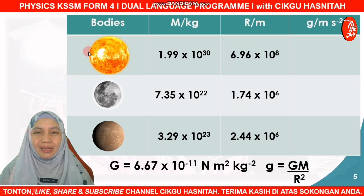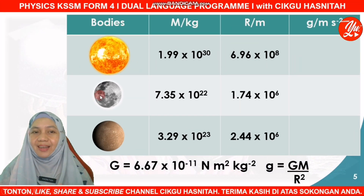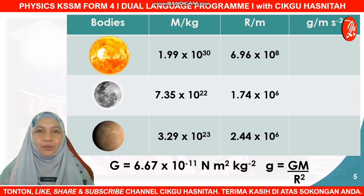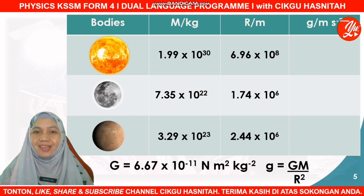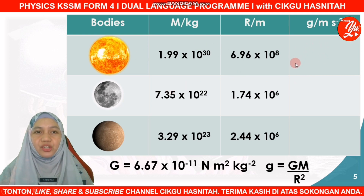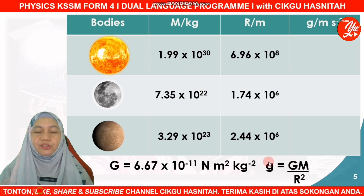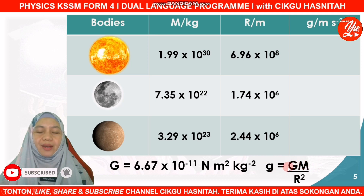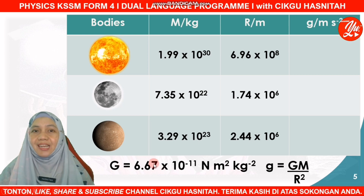Okay, I believe you all know this is the sun. The second is the moon. The third is the planet closest to the sun — yes, it is Mercury. We are going to find the gravitational acceleration on the surface of each of these bodies by applying the formula g = GM/r². This is the value for the gravitational constant. Are you ready?